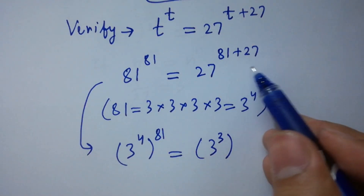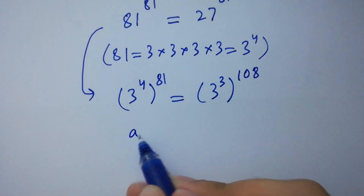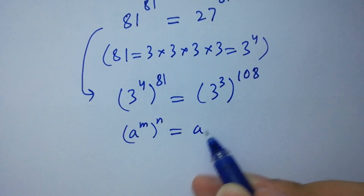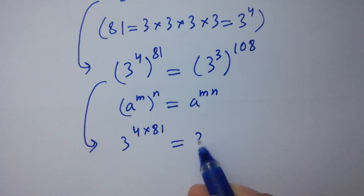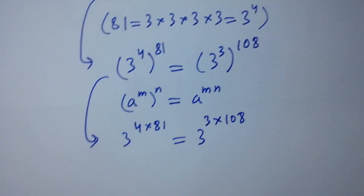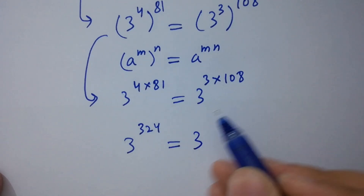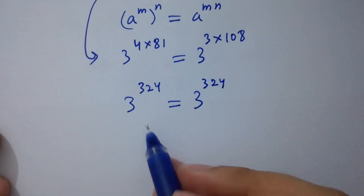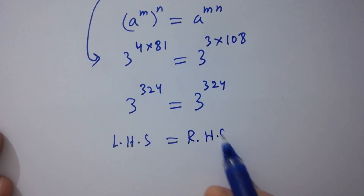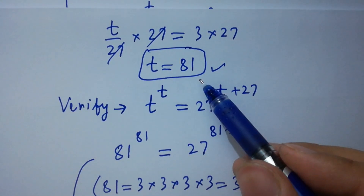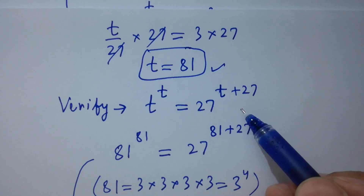As a to the power m to the whole power n equals a to the power m times n, we have 3 to the power 4 times 81 equals 3 to the power 3 times 108. So 3 to the power 324 equals 3 to the power 324. Base and powers are the same, so left hand side equals right hand side, which shows that t equals 81 satisfies the equation.